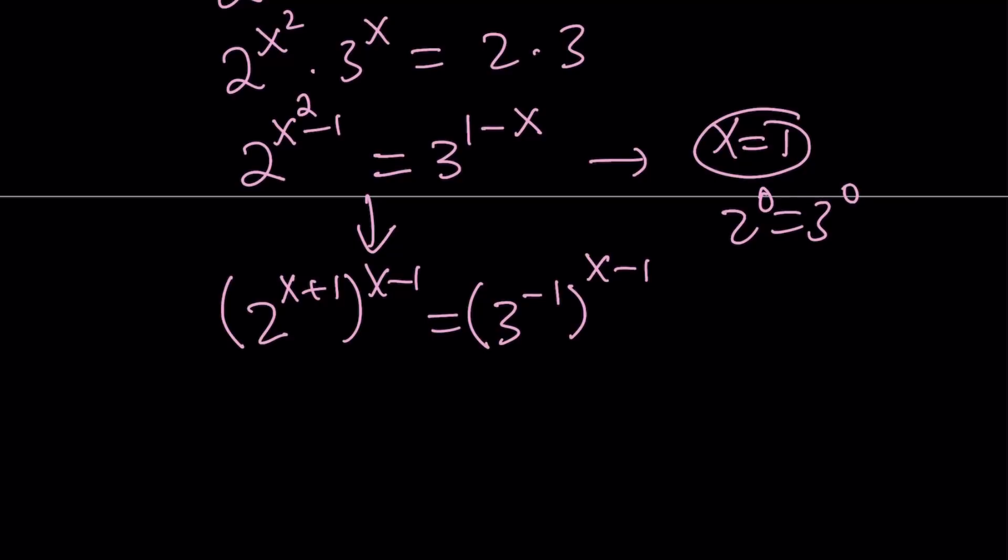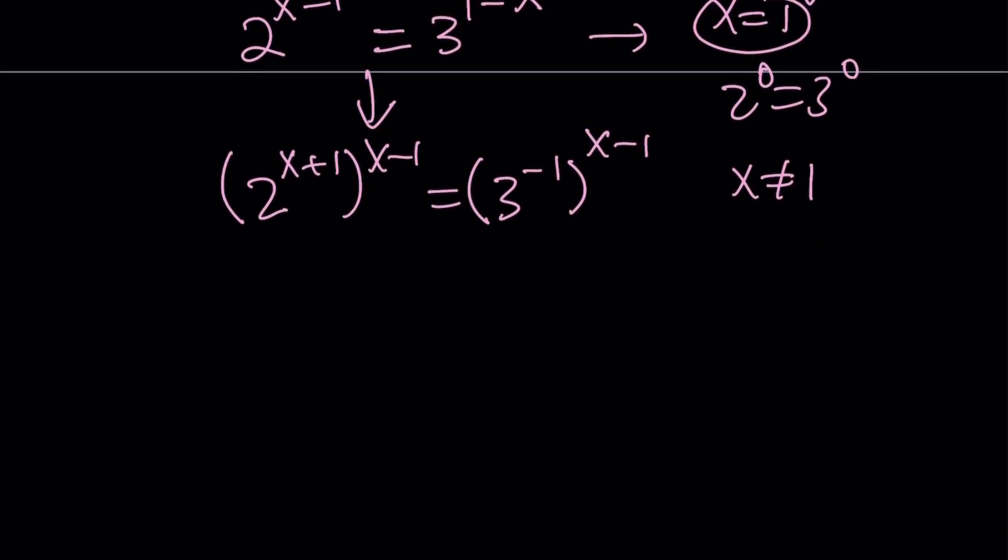I'm assuming x does not equal 1 because I already got that as a solution. If x ≠ 1, I can raise both sides to the power 1/(x-1). It's equivalent to dividing the exponents by x-1, so they cancel out. We end up with 2^(x+1) = 3^(-1), which is 1/3.